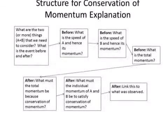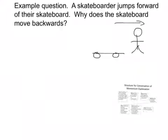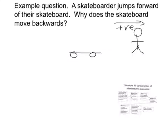Now we get to the interesting bit, which is to consider what the individual momenta must be in order to satisfy conservation of momentum. We were told that the skateboarder jumps forwards, meaning they have some positive momentum in that direction. Therefore, if the total momentum is still going to be zero, the skateboard must move in the opposite direction with a negative momentum of equal size, so that when you add the positive and negative momenta together, they still add up to zero. That explains why the skateboard moves backwards.